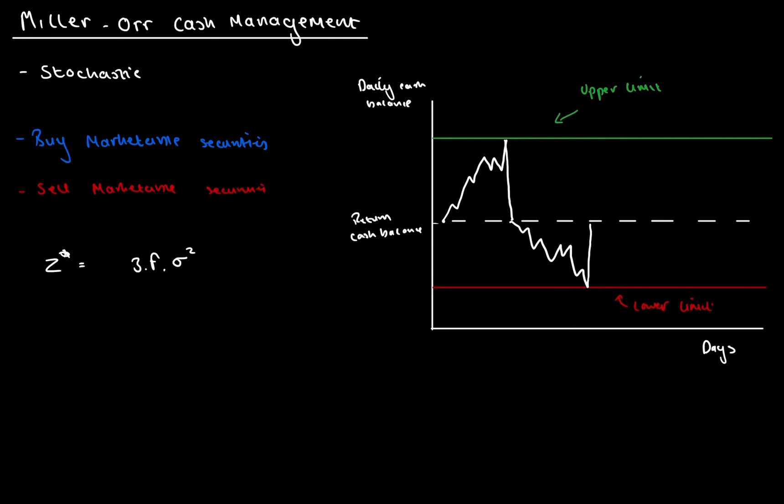And this is incorporating the stochastic model. Because by doing this, we're assuming that the cash inflows and outflows are random. Then what we do is we go four over R, R being the opportunity cost of not having our money in marketable securities, cube rooted plus our lower limit. Now, our lower limit is set by management. And this can be anything from $50,000, $20,000. And it's dependent on a couple of factors.